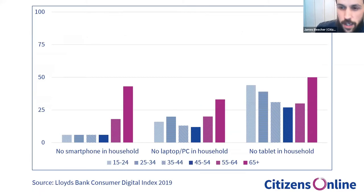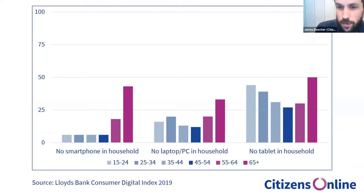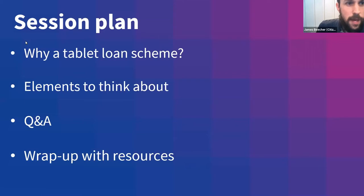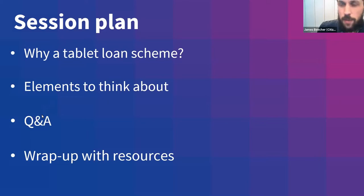I want to talk briefly about why we're running today's session. We know that lots of people don't have digital devices. A chart from the Lloyds Bank Consumer Digital Index last year shows that older groups are less likely to have smartphones, laptops, PCs, and tablets. People who are new users of the internet often like tablets because they're less daunting than a laptop, but also less constraining than a smartphone. Today we'll talk about why you'd want to run a tablet loan scheme, elements to think about in planning a project, with about half the session for Q&A, then wrap up with resources.